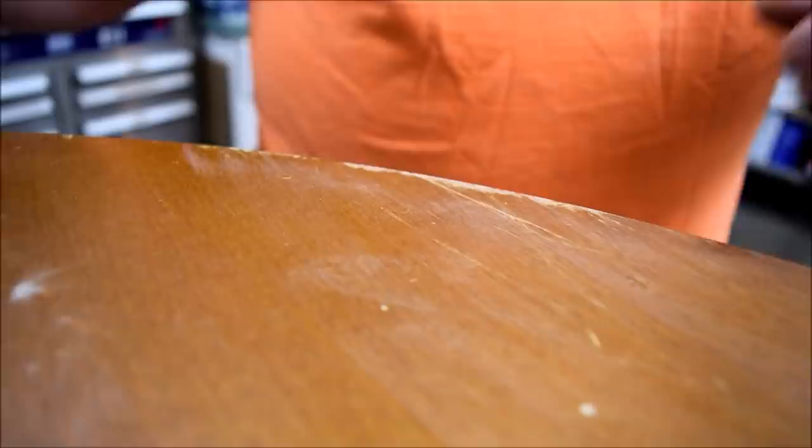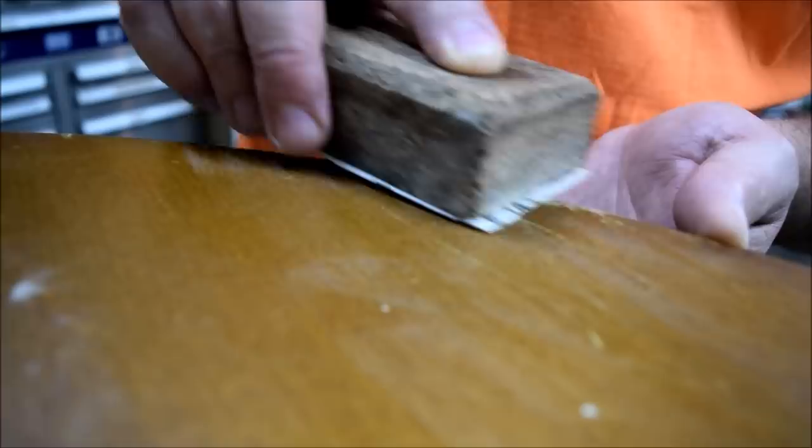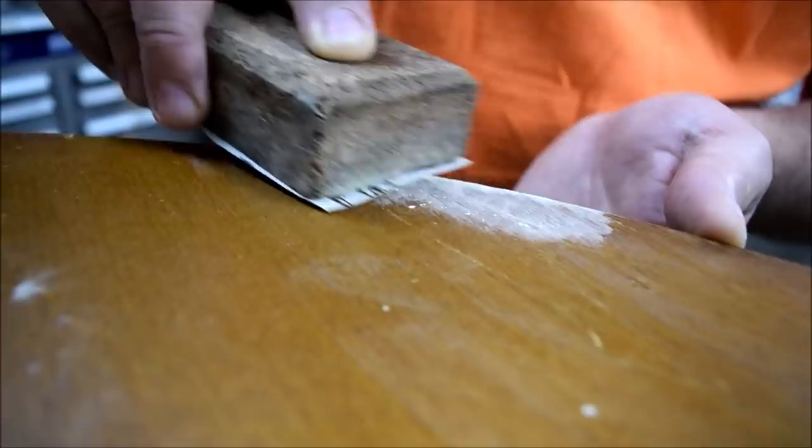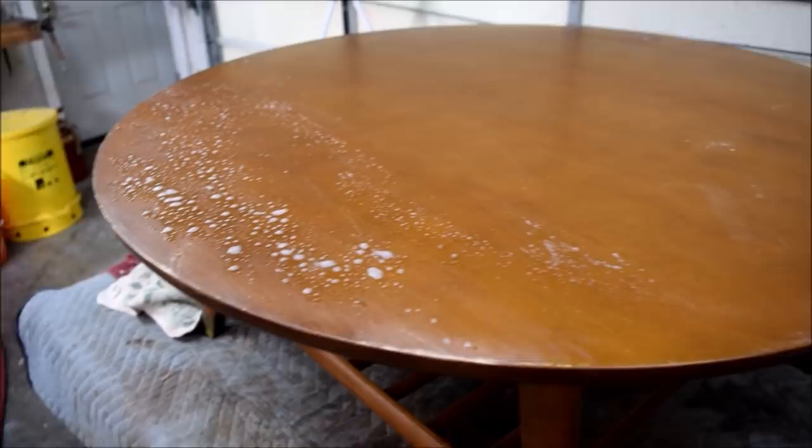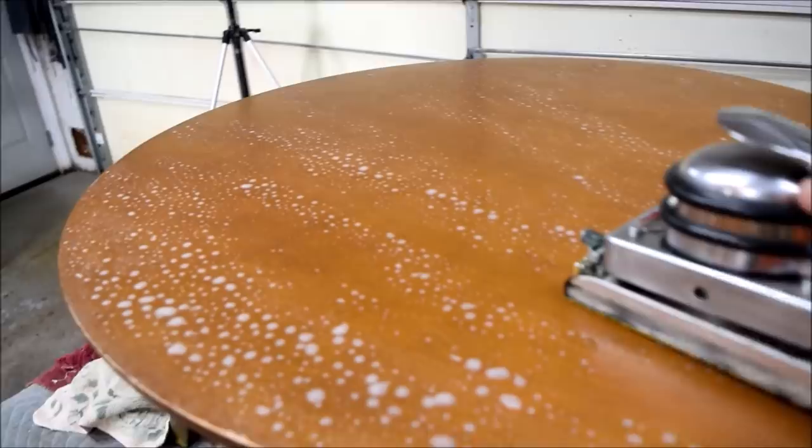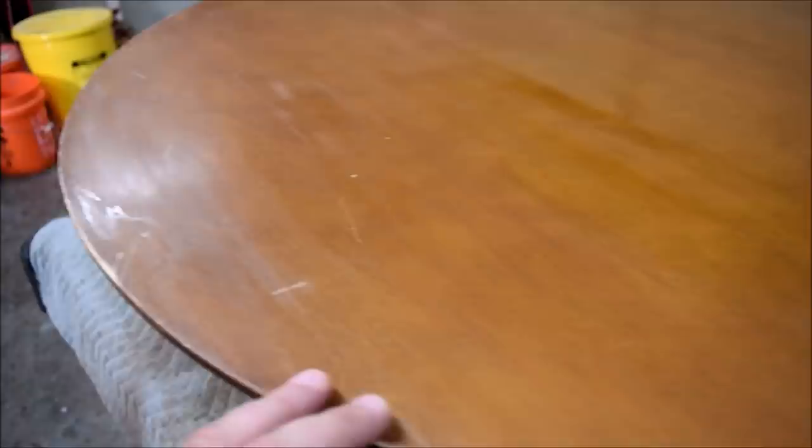And then I'm going to wet sand the entire top. And then I'm going to come back and seal these areas here that are without color. And then we're going to go ahead and do our touch out. So here we go. And what I'm using here is 320 gold on a block. I'm trying to smooth the transition from the old finish to the repair. And we'll do that all along the table. Okay, now what I'm going to do here is just apply some soapy water as a lubricant. And we're going to wet sand this with 400, wet dry, just to get that top layer finish off.